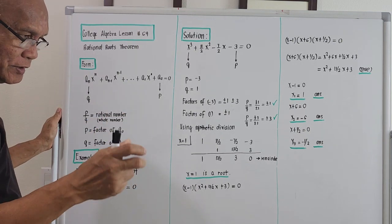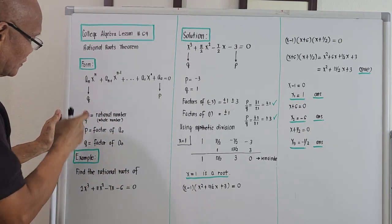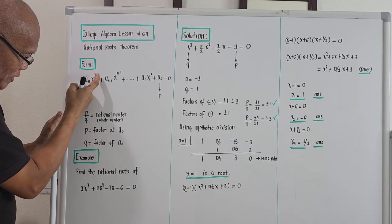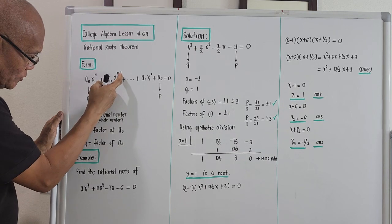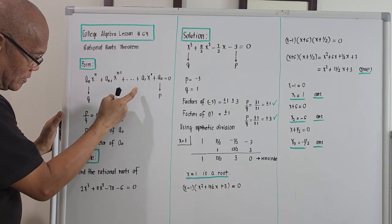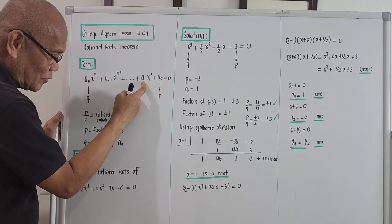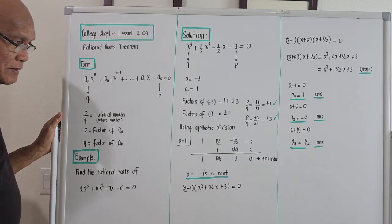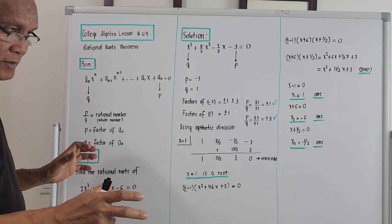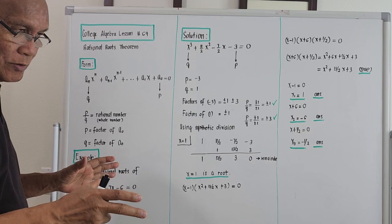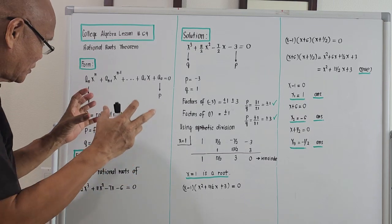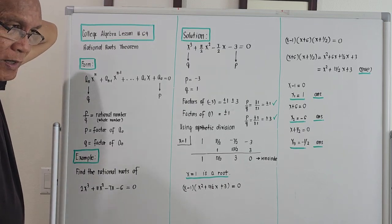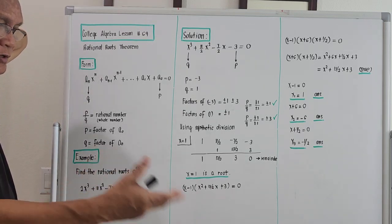If you notice, the subscript of each coefficient corresponds to the exponent of x. So if the exponent is n, the subscript is n; if the exponent is n minus one, the subscript is n minus one. For the second-to-last term, if the exponent is one, it is simply x to the first or just x. The main problem is to find the solution of this polynomial equation, which contains many terms.